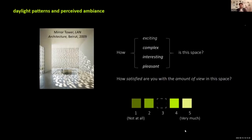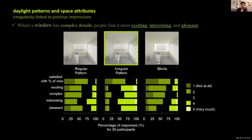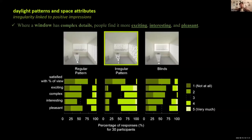They chose this irregular pattern as a very exciting pattern for the window. What does it tell you as a designer? Think about it — even if your space is like a shoe box, by the pattern of sunlight and shadow, you can make your users excited, avoid them being bored, and give them a different experience. It's going to be a pleasant, interesting experience — not a boring place you just want to escape from.